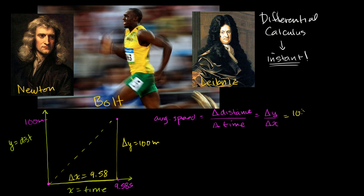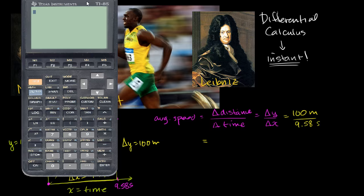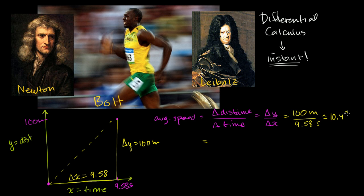So it's going to be 100 meters over 9.58 seconds. The slope is essentially the rate of change — or you could view it as the average rate of change between these two points. If you follow the units, it gives you units of speed — it would be velocity if we also specified the direction. Let me get a calculator: 100 divided by 9.58 is approximately 10.4 meters per second.